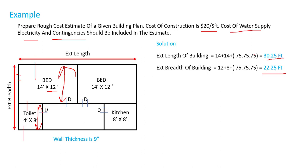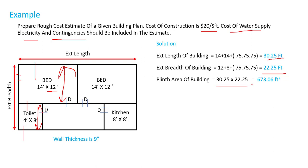We have external length as 30.25 feet and external breadth as 22.25 feet. Now we can find out the total plant area. The total plant area for the building will be equal to 673.06 square feet.